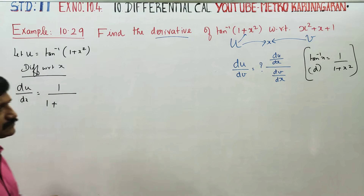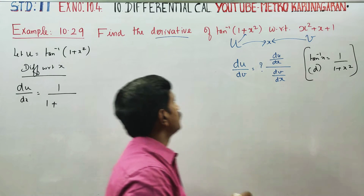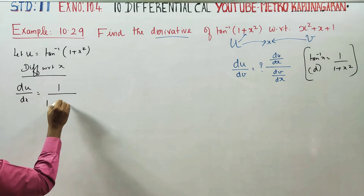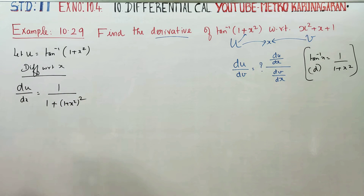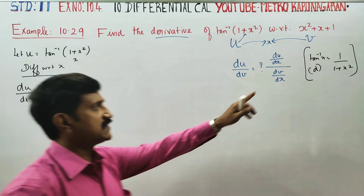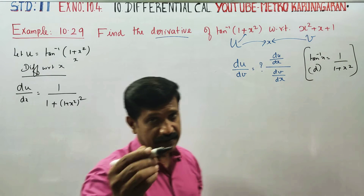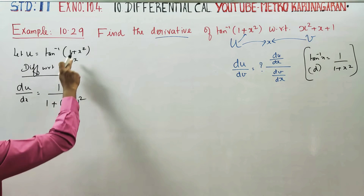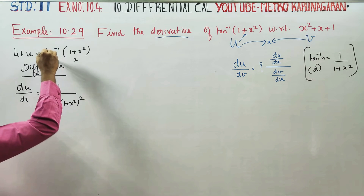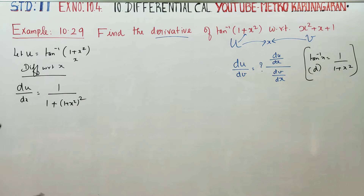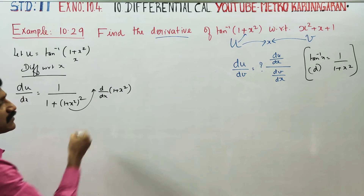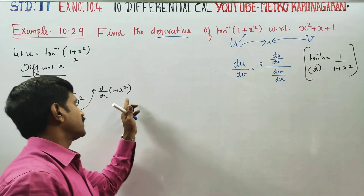du by dx: differentiating tan inverse gives 1 by 1 plus the argument squared. Here the argument inside tan inverse is 1 plus x square, so we get 1 by 1 plus (1 plus x square) whole square. Since 1 plus x square is a function of x, we apply the chain rule and multiply by d by dx of 1 plus x square.